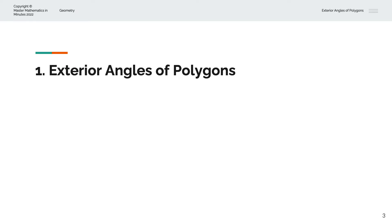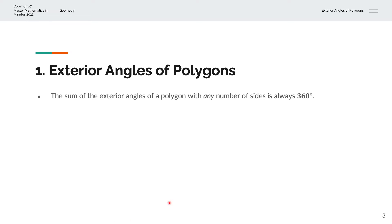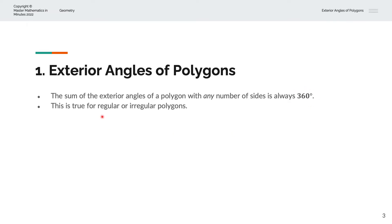So what are exterior angles of polygons? The sum of the exterior angles of a polygon with any number of sides is always 360 degrees. This relation is true for regular or irregular polygons. Regular polygons have sides of equal length, and irregular polygons have sides of different length. This relation holds regardless of whether we're considering regular or irregular polygons.